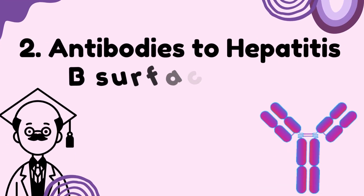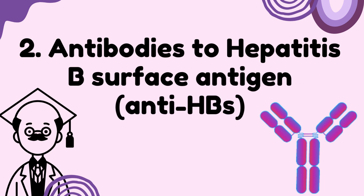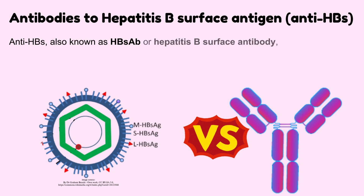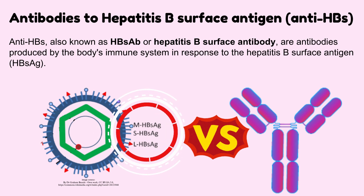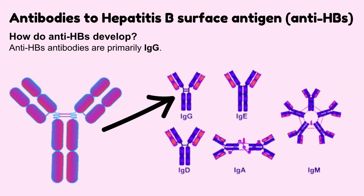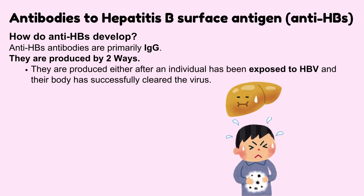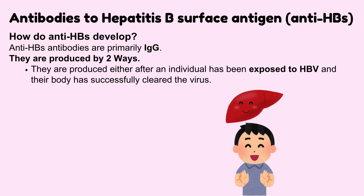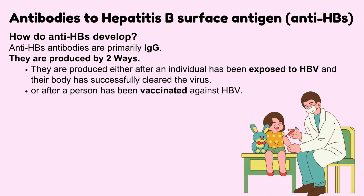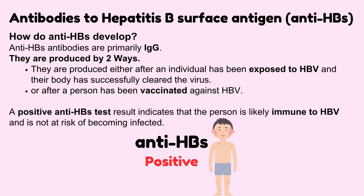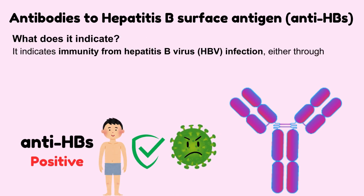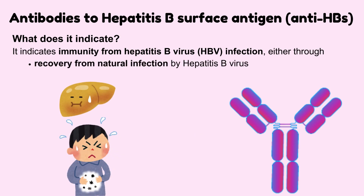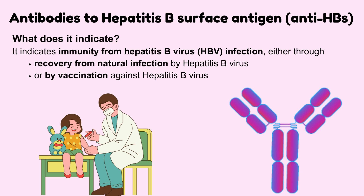Number 2: Antibodies to hepatitis B surface antigen, anti-HBs, also known as HBsAb or hepatitis B surface antibody. These are antibodies produced by the body's immune system in response to the hepatitis B surface antigen. Anti-HBs antibodies are primarily IgG type and are produced in two ways: either after an individual has been exposed to HBV and their body has successfully cleared the virus, or after a person has been vaccinated against hepatitis B. A positive anti-HBs result indicates that the person is likely immune to hepatitis B and is not at risk of becoming infected.